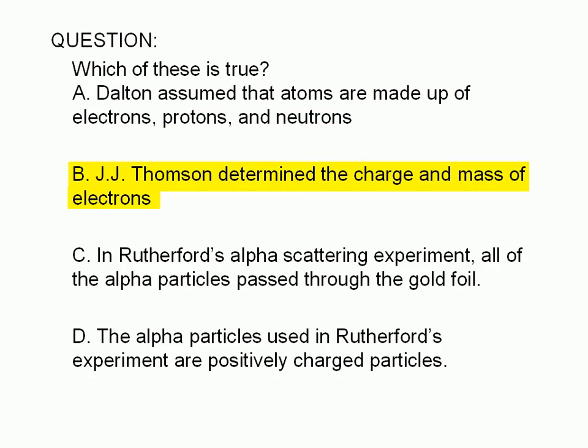B: J.J. Thompson determined the charge and mass of electrons. C: In Rutherford's alpha scattering experiment, all of the alpha particles passed through the gold foil.